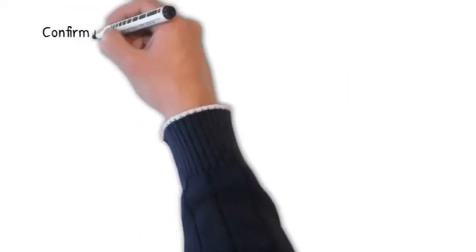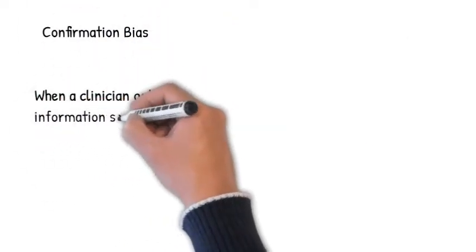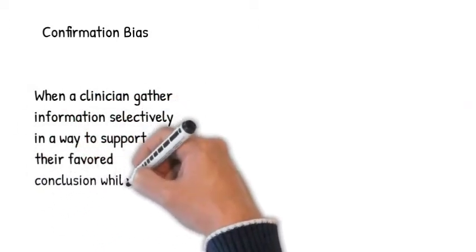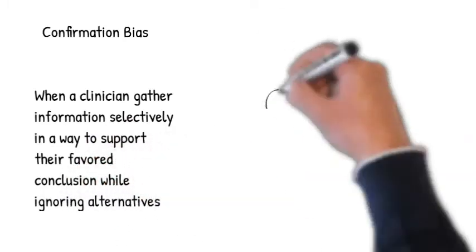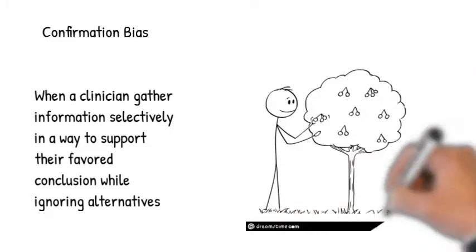Confirmation bias occurs when we gather information selectively or interpret it in a way to support our favored conclusion while ignoring alternatives. When a clinician falls into a confirmation bias trap, they are no longer following the scientific process and are rather creating a case for why they are right.